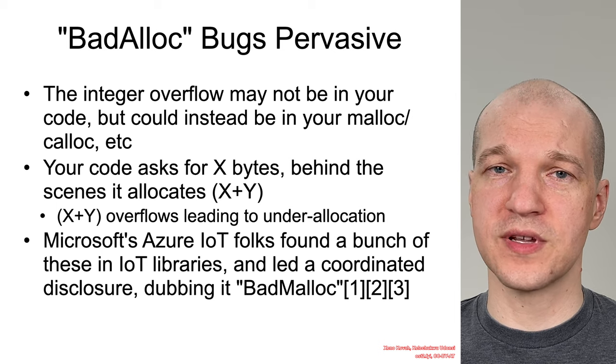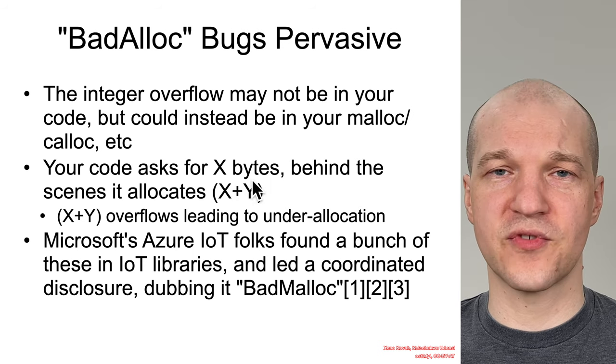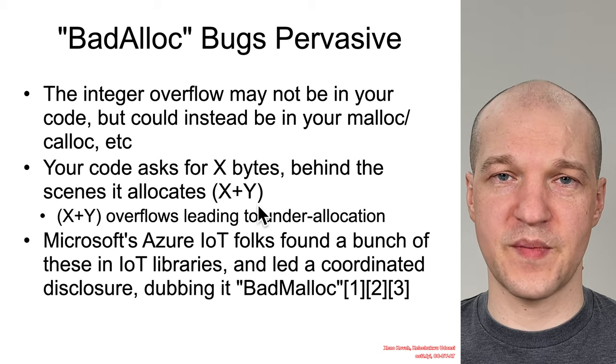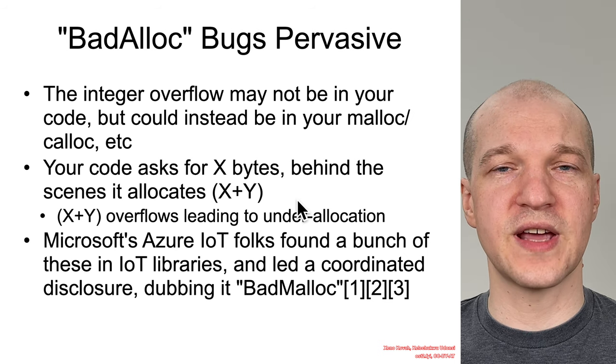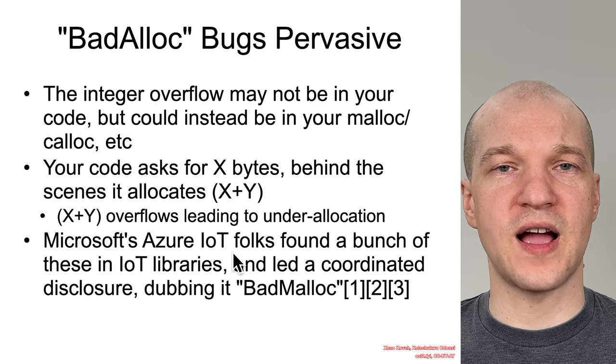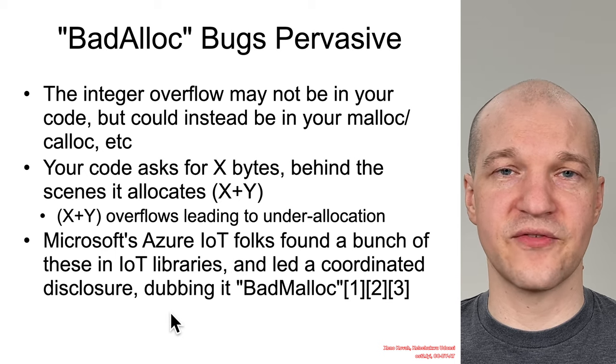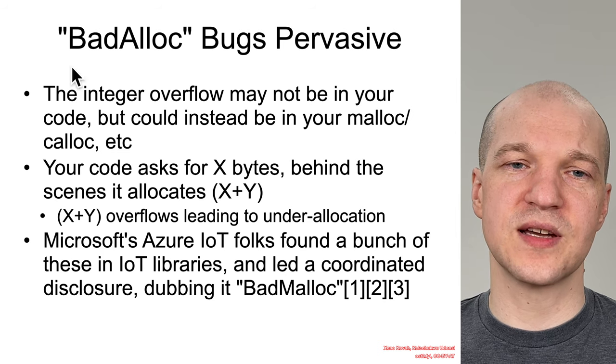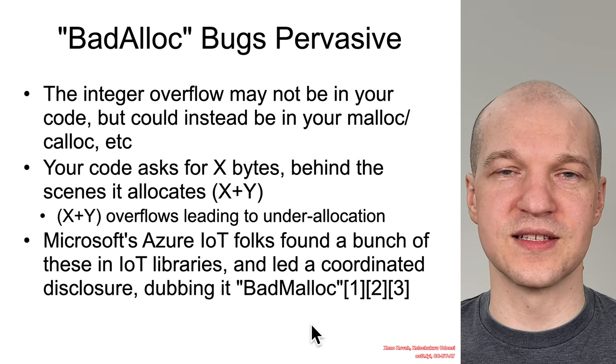So it's actually unfortunately common that allocators may not be checking for integer overflows themselves. So even if the bug was not in your code, your allocator might be causing an integer overflow. So for instance, normally when you ask for x bytes from an allocator, behind the scenes, it may allocate x plus y bytes in order to create some space for heap metadata that the allocator manages itself. So this x plus y allocation could actually overflow and ultimately the allocator could allocate too little space. So Microsoft's Azure IoT folks, Internet of Things folks, had been looking at a bunch of IoT libraries and they found like a whole bunch of these things were having integer overflows inside the allocation library itself. So they dubbed it bad alloc bugs and led a big massive coordinated disclosure campaign.